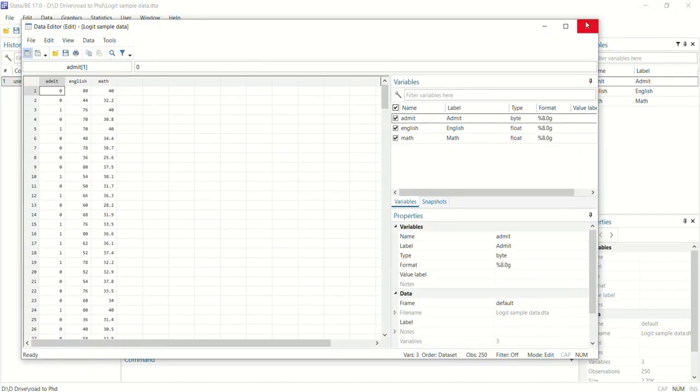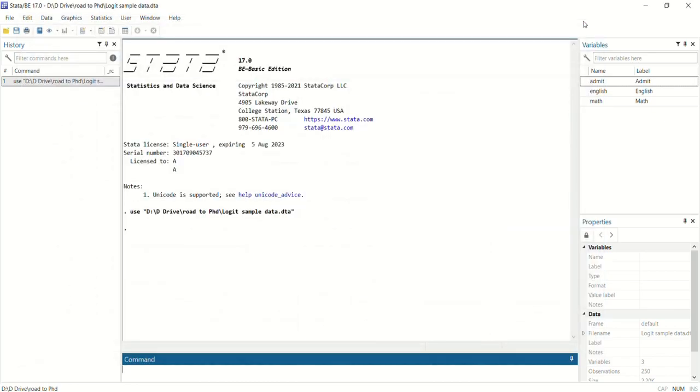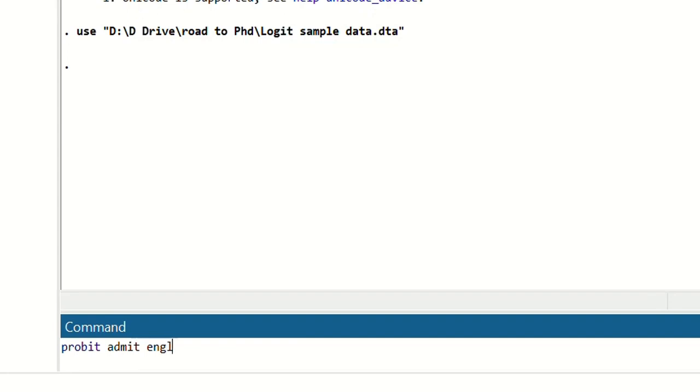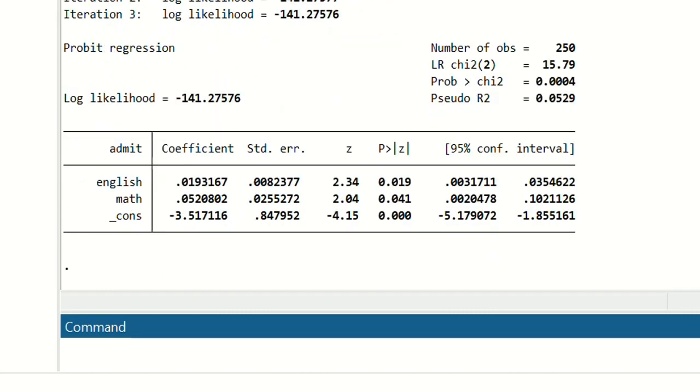Here is the sample data that we will use for this exercise. To run the probit regression we will first write our dependent variable, then add our independent variables to the model, and press enter. Here are the results for probit regression.